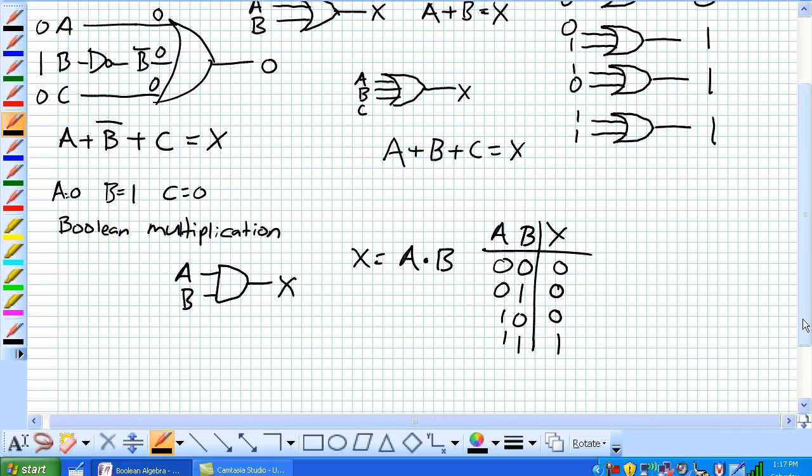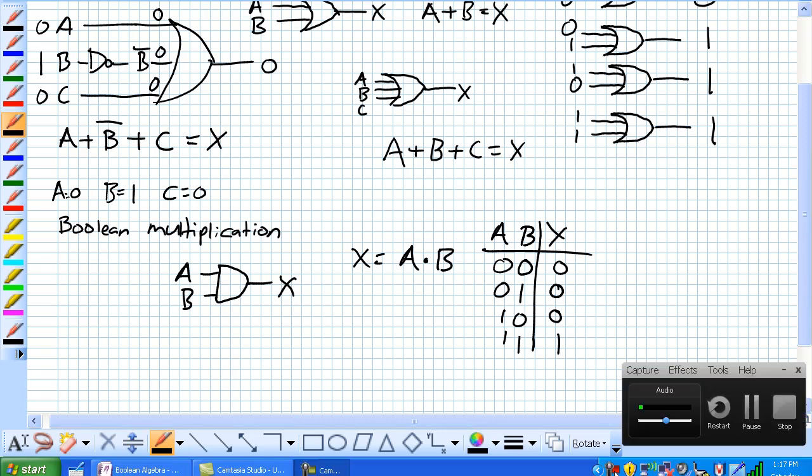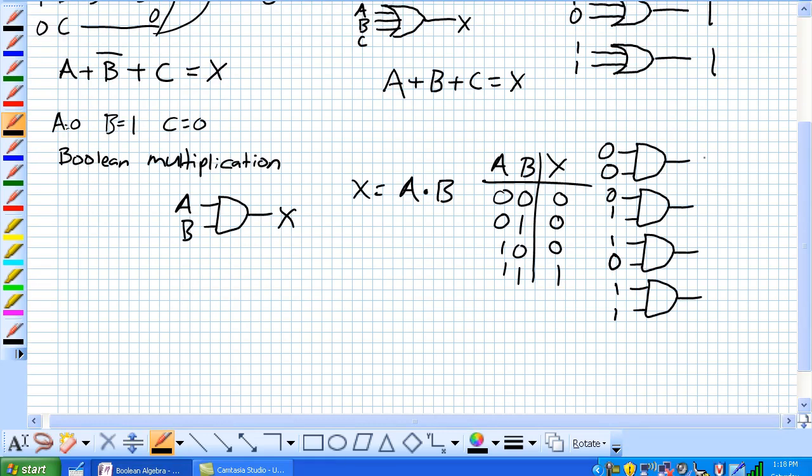The output X is equal to A and B and our table is as such. Given the equivalence here of the gates, we can make it look like this: 0 and 0 equals 0, 0 and 1 is 0, 1 and 0 is 0, 1 and 1 equals 1. Basically, just highlighting that Boolean multiplication is the same thing as the AND gate.